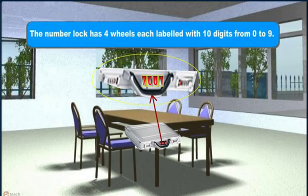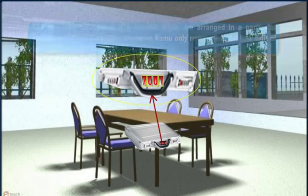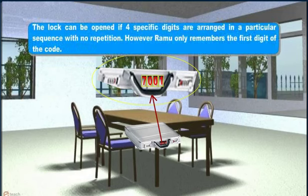The number lock has 4 wheels, each labeled with 10 digits from 0 to 9. The lock can be opened if 4 specific digits are arranged in a particular sequence with no repetition.